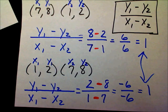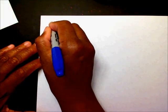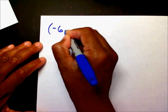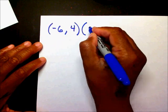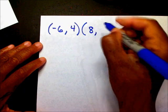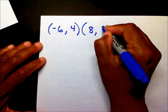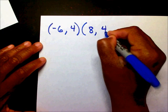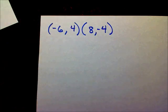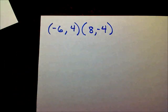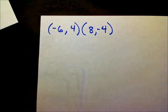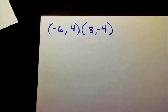I'd like for you to work one. I'm going to give you the points (negative 6, 4) and (8, negative 4). I made it a bit more challenging this time by putting negatives in there, to show you how the negatives will affect our problem with that minus sign. Please turn the video off right now and find the slope using these two points.